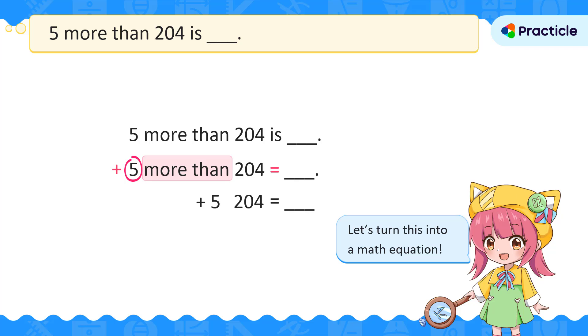The next thing that we're going to do is to put the other number in front of the plus sign. Do you see what I see? I'm sure all of you can solve this addition equation now, right? What does 204 plus 5 give us?